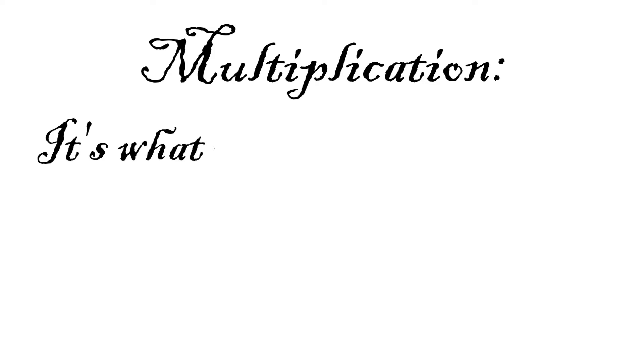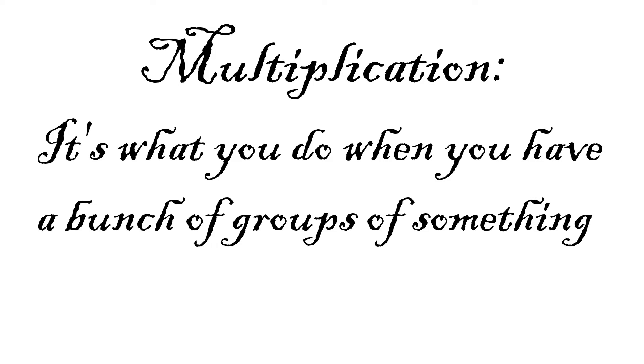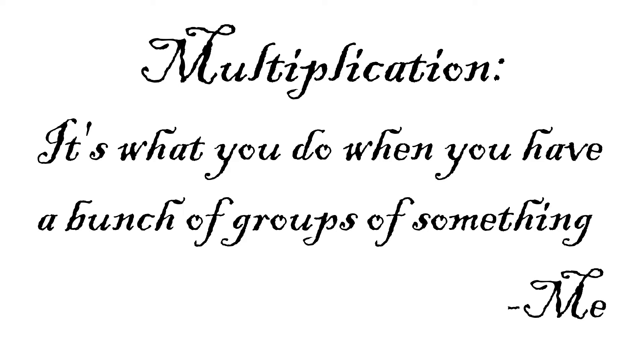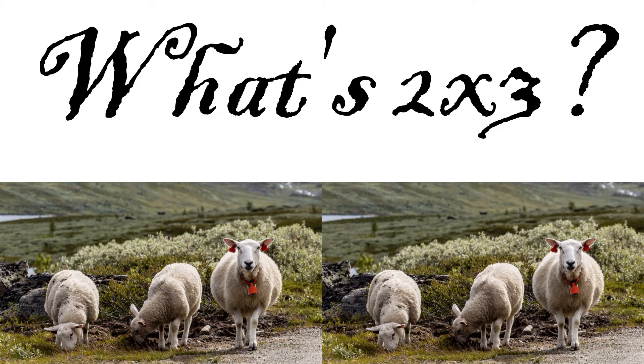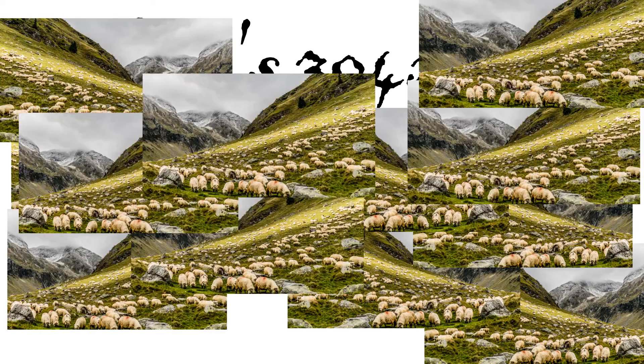Multiplication — it's what you do when you have a bunch of groups of something. If you're asked what two times three is, just think of two groups of three sheep; if you count them all, you'll have six sheep. Now, what is 304 times 467? Just imagine 304 groups of 467 sheep, and the answer is very easily 141,968.